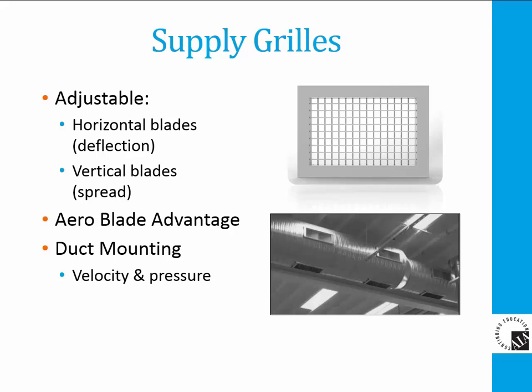An enhanced performance feature of supply grills is an airfoil shaped blade, which will reduce noise and pressure. For design, it is recommended that air velocity in the supply duct be less than 1,000 feet per minute. Also, static resistance at the outlet must be at least 1.4 times the velocity pressure of the supply air to avoid turning the air from an outlet to an air inlet.